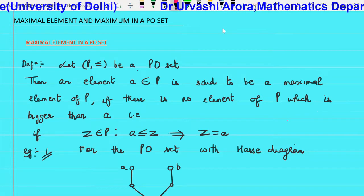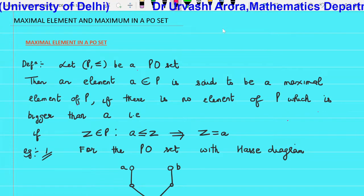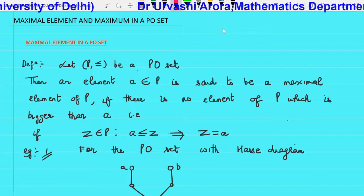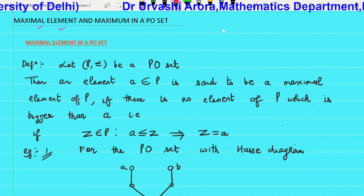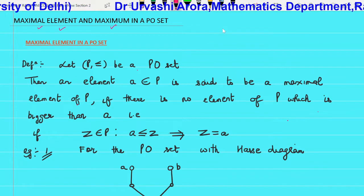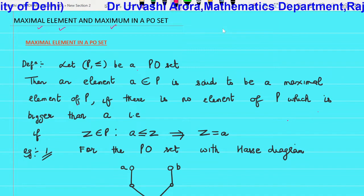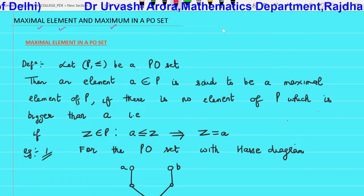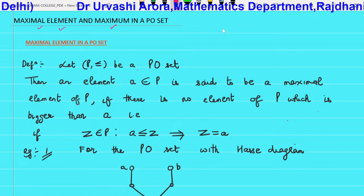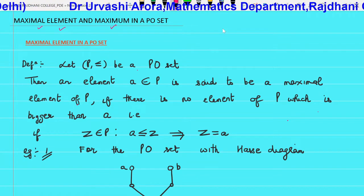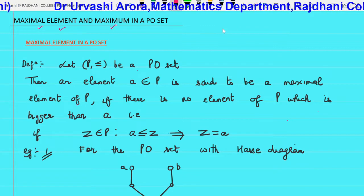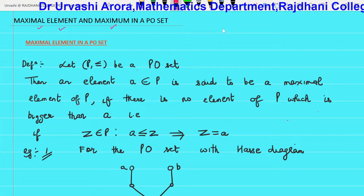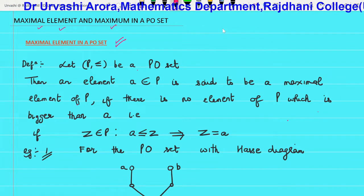In this video lecture, we are going to discuss the concept of maximal element in a PO set and maximum in a PO set, and we are also going to understand the difference between the two — the difference between maximal element and maximum in a PO set.